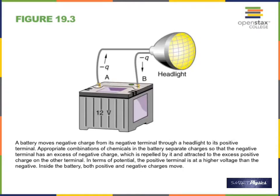Inside the battery, electric current is due to the movement of ions — both positive and negative — moving in opposite directions. Outside the battery, only electrons move; protons never move. The positive terminal is at a higher potential, and the negative terminal is at a lower potential — always.